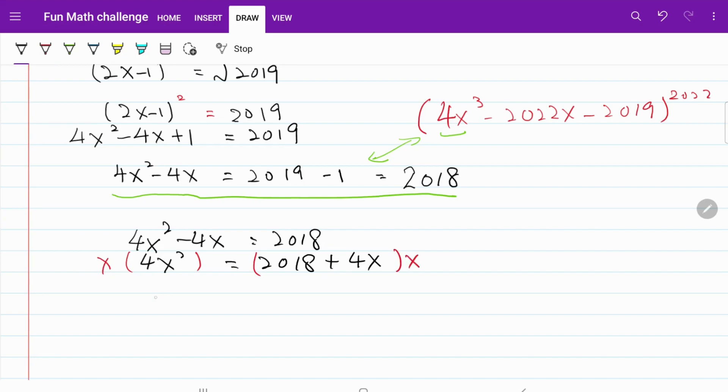Now, on the left-hand side, I have 4x cube, and on the right-hand side, I have 2018x plus 4x square. I am going to go ahead and substitute the value of 4x cube from here into this expression.